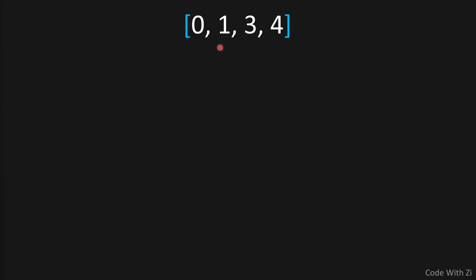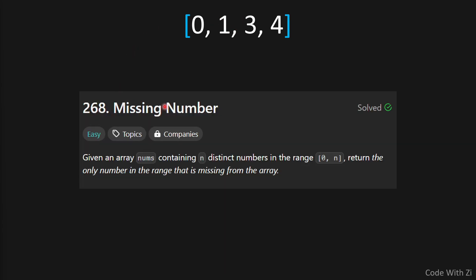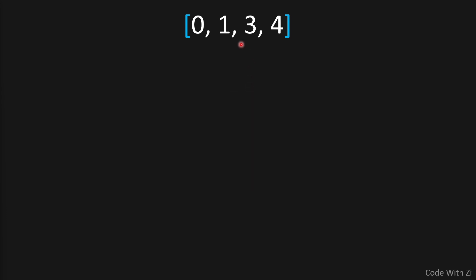Hi, how is it going? Welcome to Code with Z. In today's video we're going to find out which number is missing. That's what LeetCode 268 Missing Number is asking us to do. Given an array called nums containing n distinct numbers in the range 0 to n, return the only number in the range that is missing from the array. For example, this contains four distinct numbers, so two is missing.